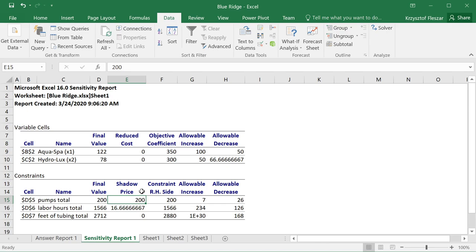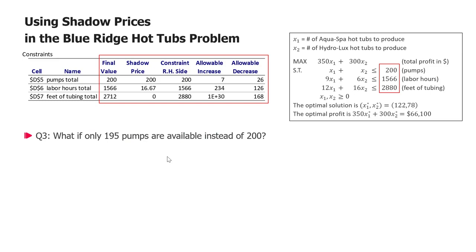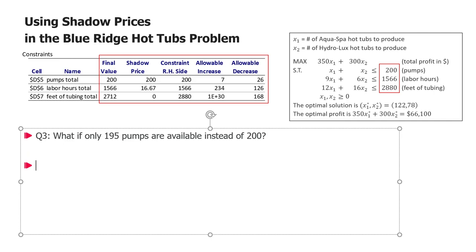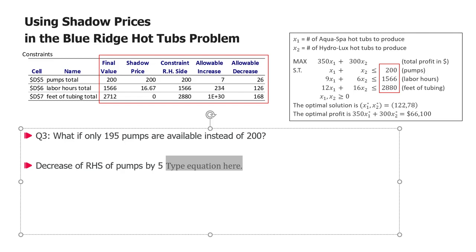Let's consider an example. Suppose 190 pumps are available instead of 200 — imagine a supplier delivered pumps but five were broken, and now we need to revise the production plan while still maximizing profit. We would need to re-solve the problem to find the new optimal solution, but we can determine the new optimal profit without re-solving because we have the shadow price and know the allowable increase and decrease. This is a decrease of the right-hand side of the pumps constraint by five.